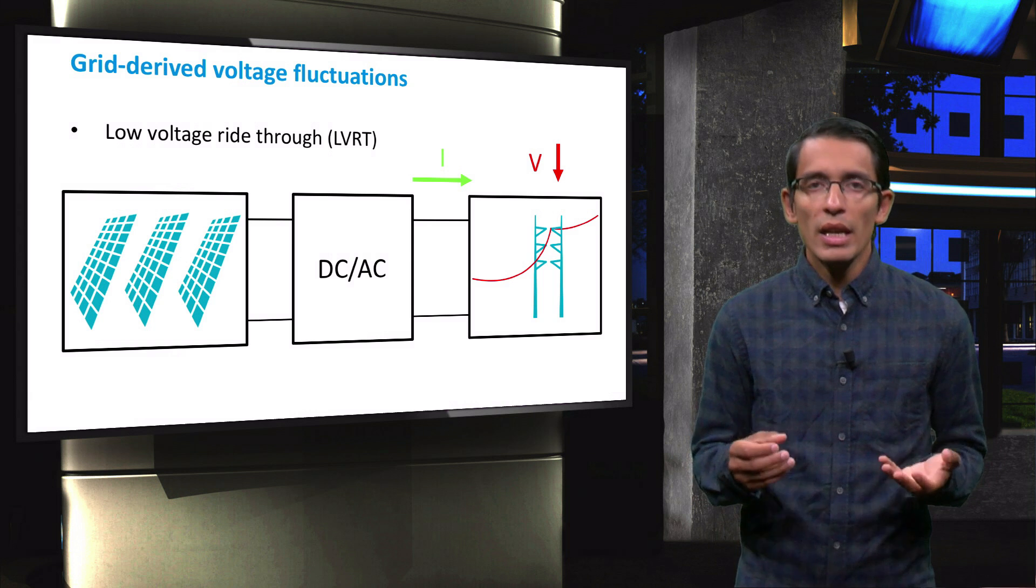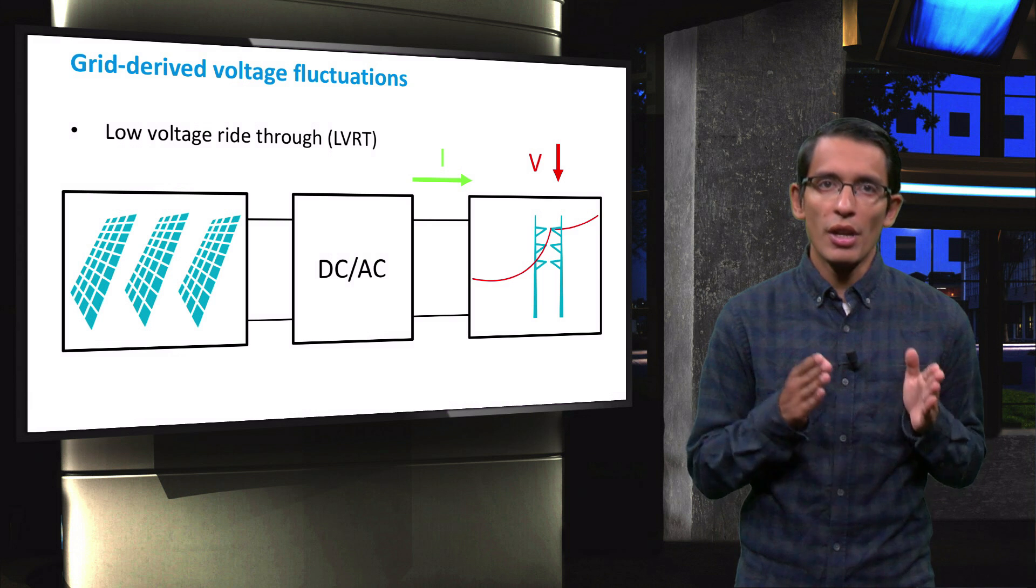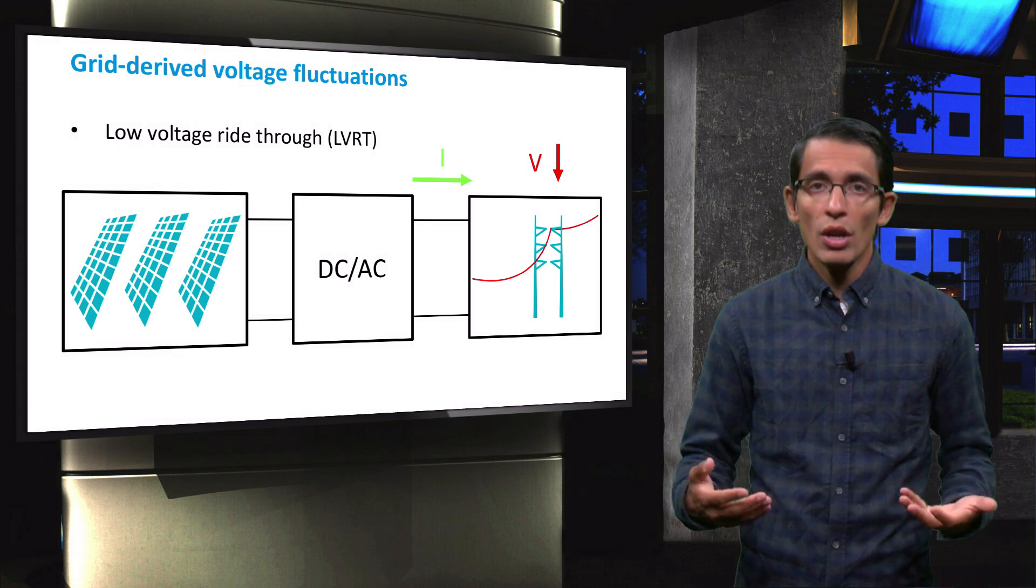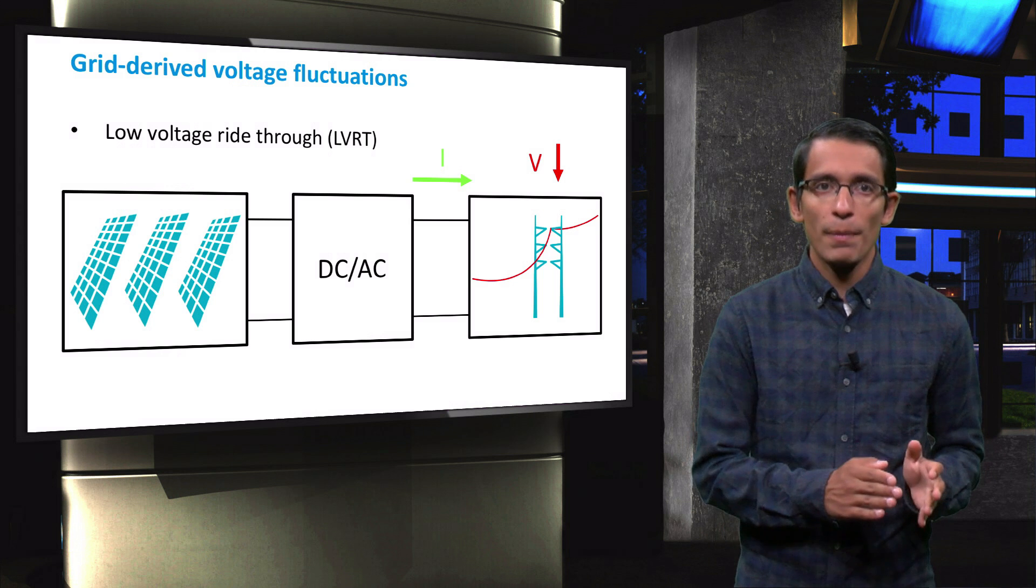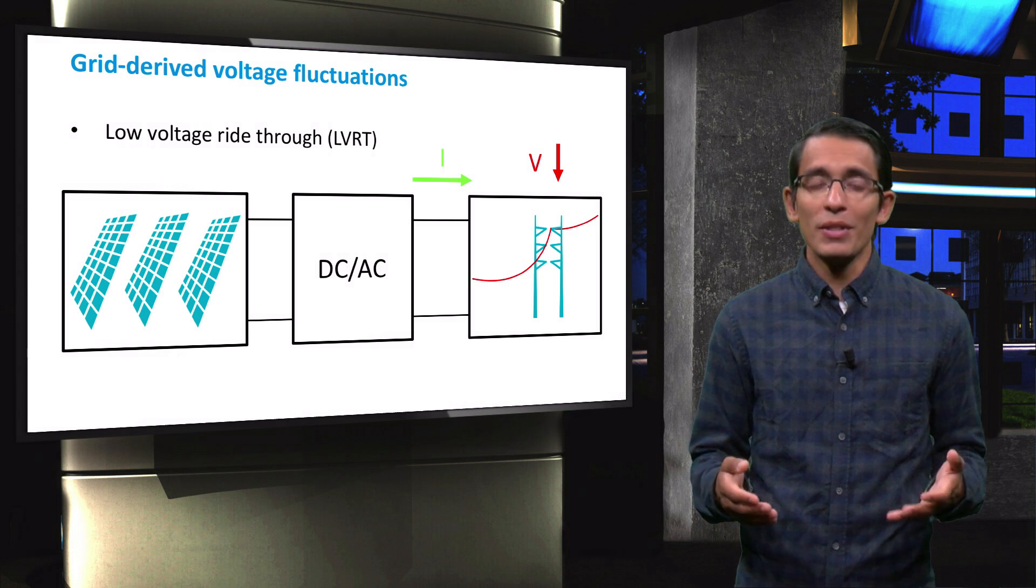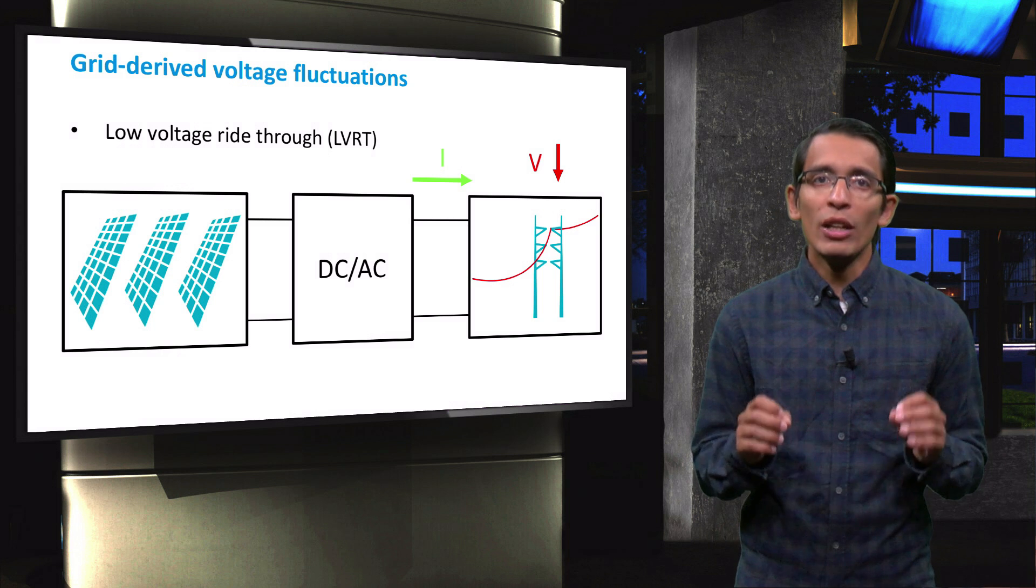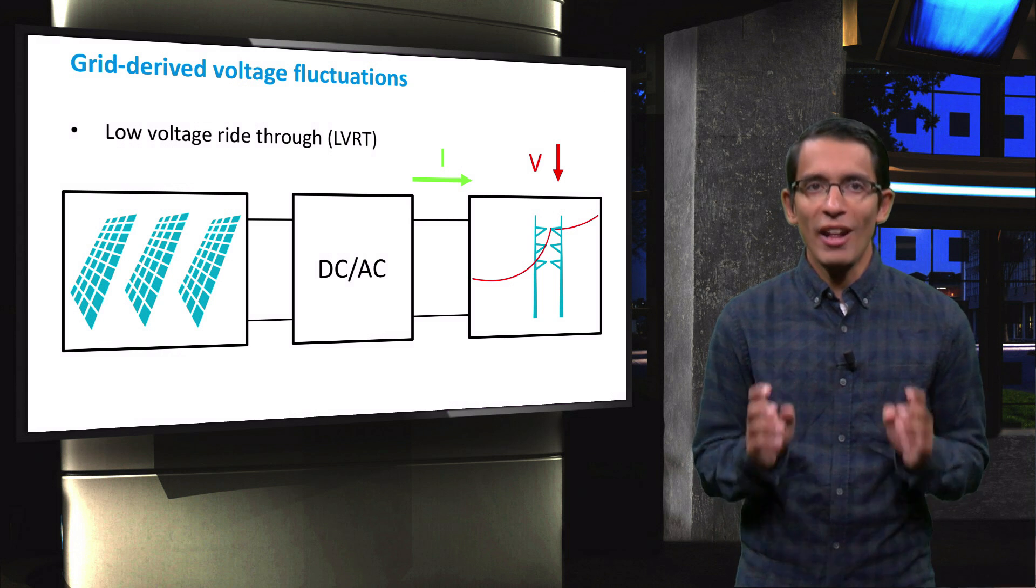Without LVRT, a small grid fluctuation would cause the PV to shut off. This, in turn, would cause a greater voltage dip, which would result in a cascading failure. Such a failure may result in a major blackout, so LVRT protection is essential to keeping grids healthy.